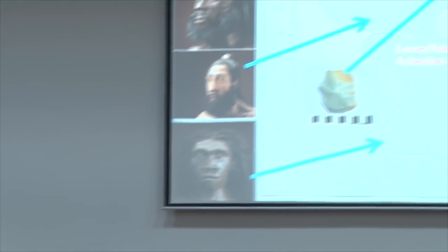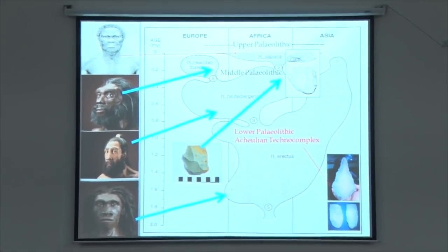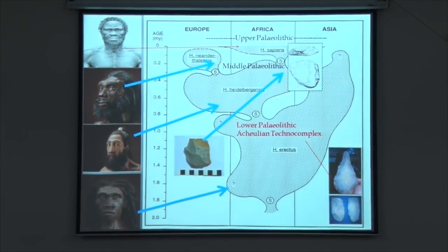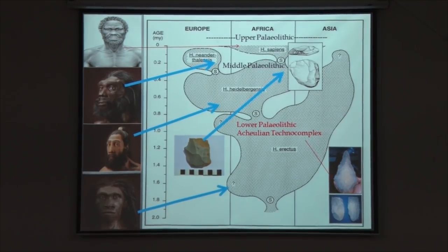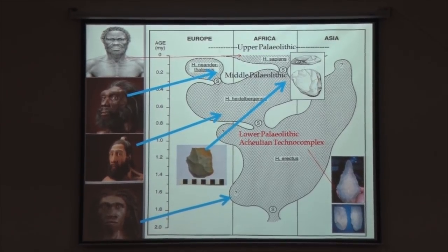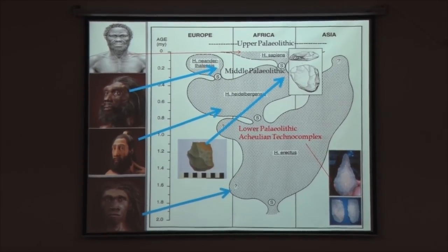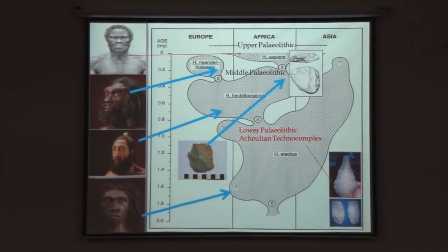With this background, I would like to emphasize why India has played a very important role in the reconstruction of the prehistory of the Indian subcontinent. As you can see here, Europe, Africa, and Asia are three contiguous continents. They constitute what we call in archaeological parlance the Old World, because these are the continents where we have the oldest evidence of human settlements.